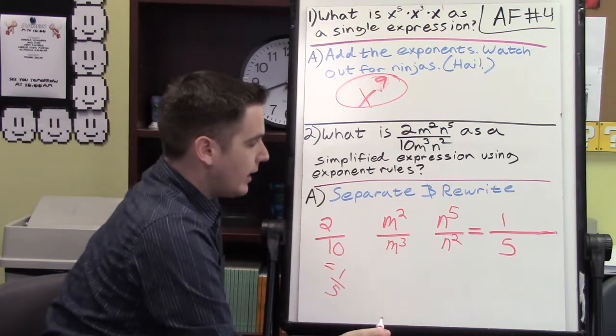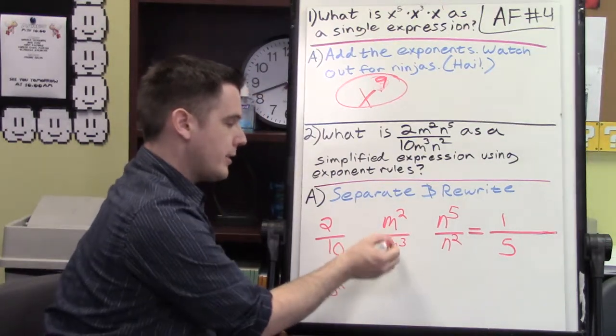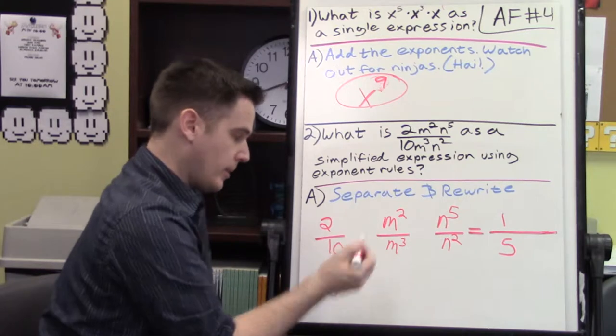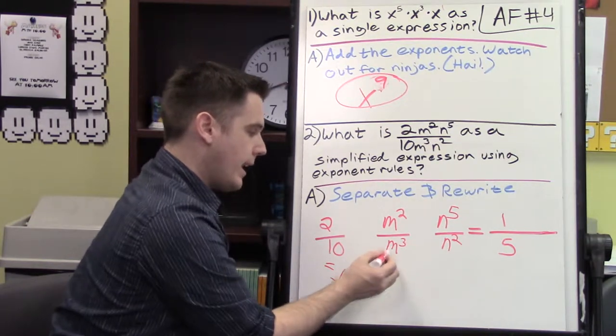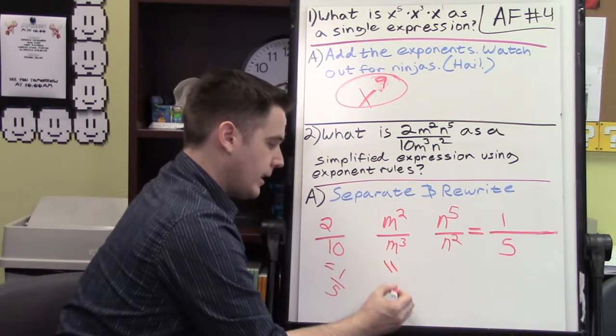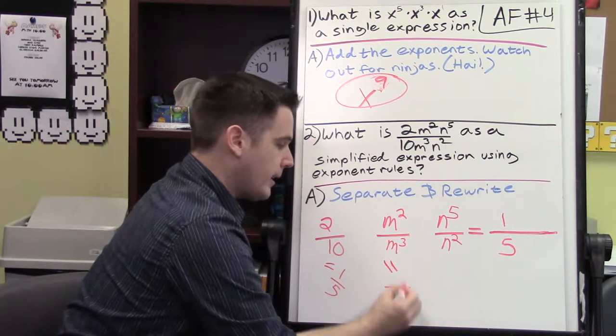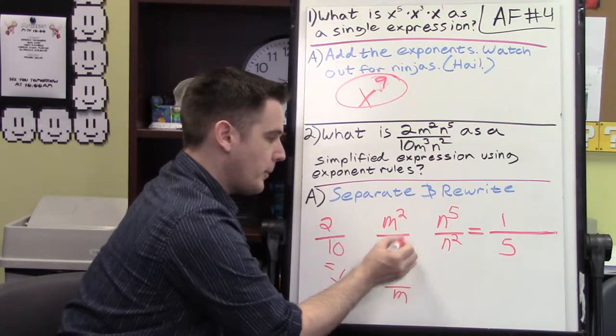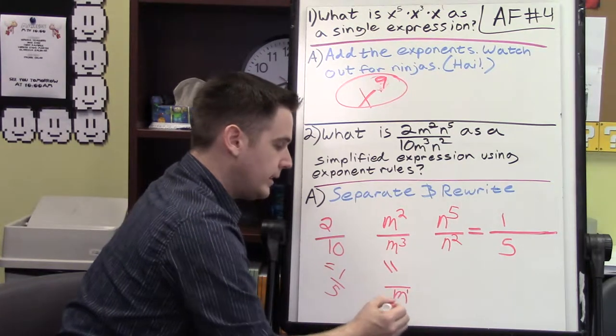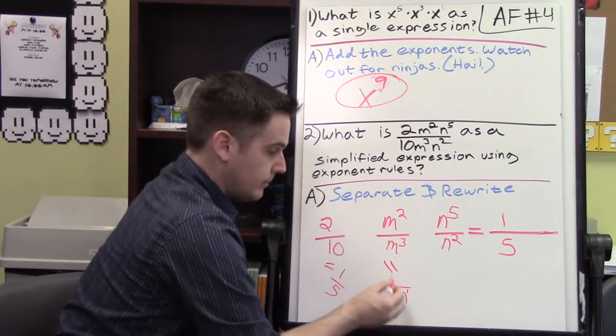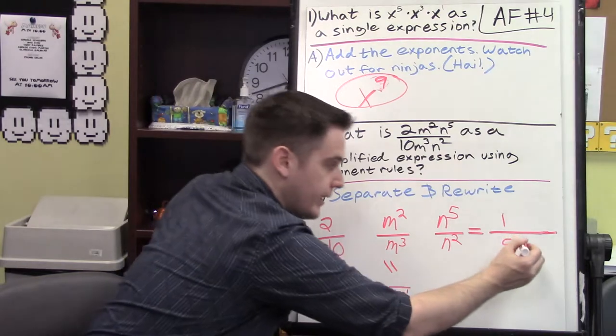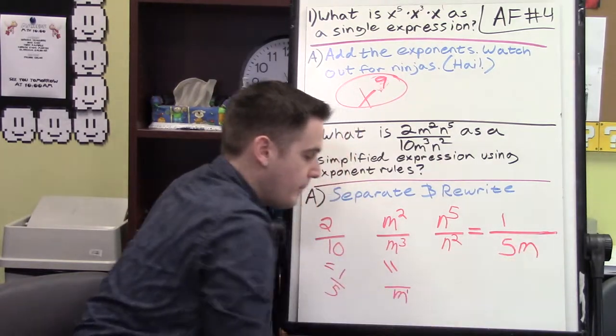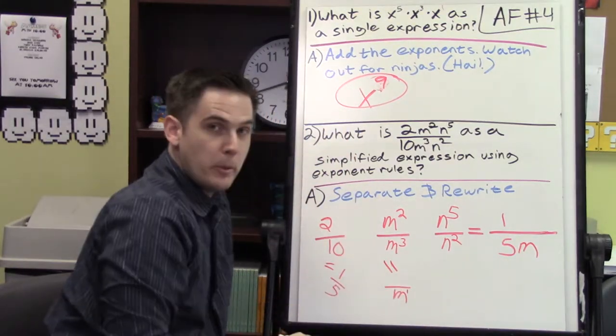Now over here, we've got division. The letters are the same - we set them up that way. That means the m is going to stay on the bottom because that has the bigger exponent. And then we subtract them, 3 minus 2 is 1, and then nothing on top. So over here, we're just going to put an m, and the ninja one will go back into hiding.